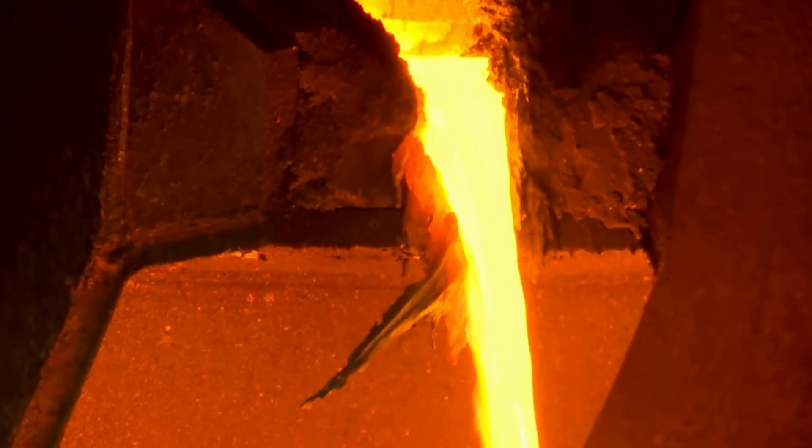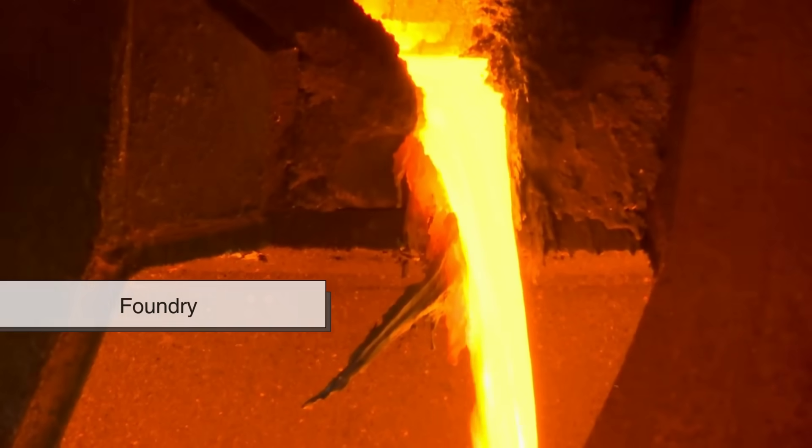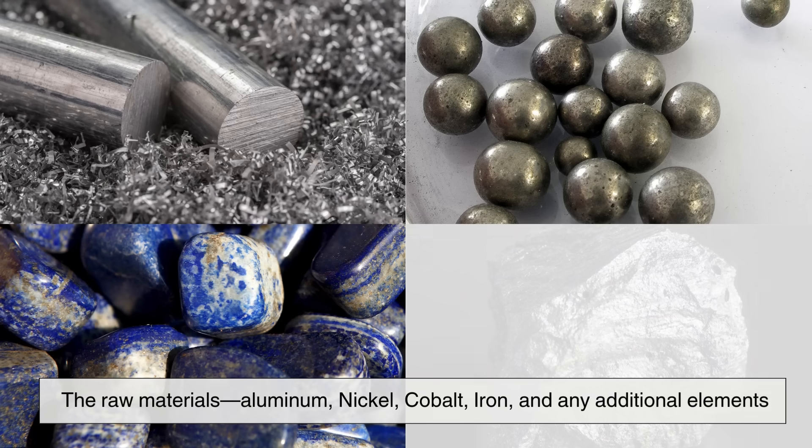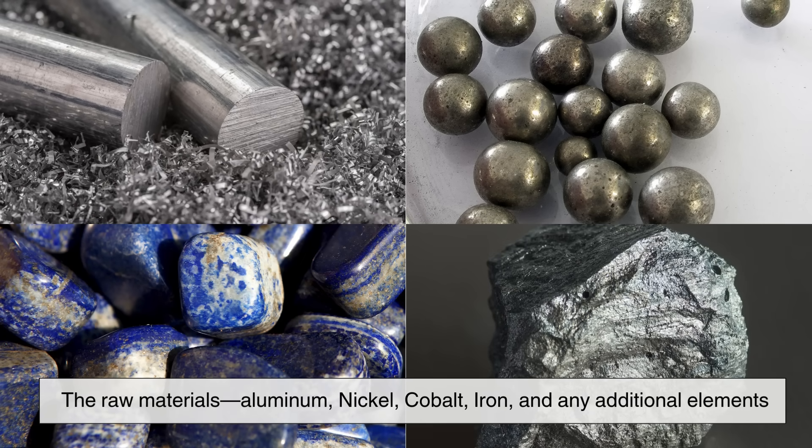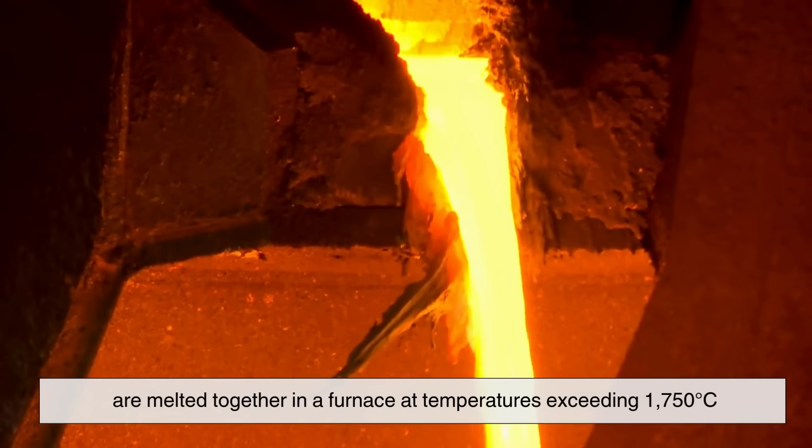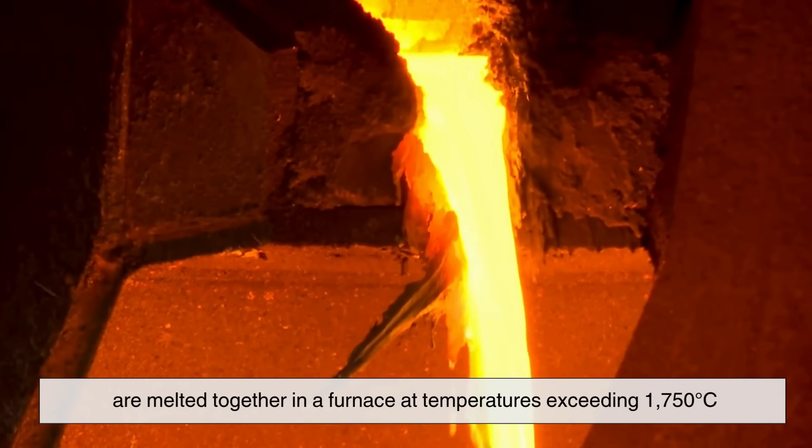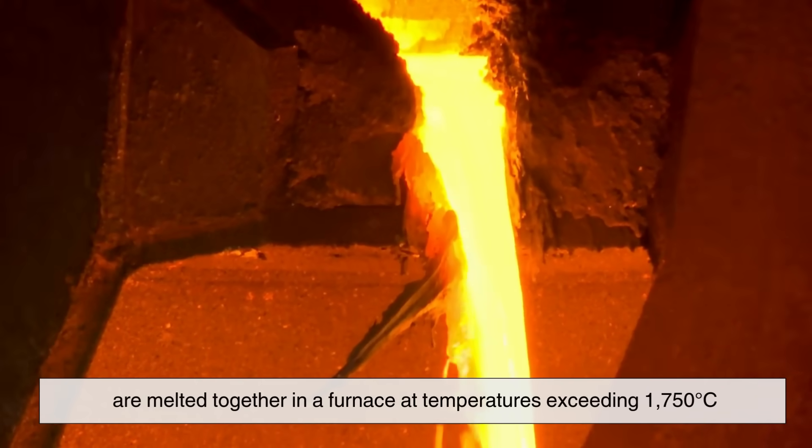The journey of an Alnico magnet begins in a foundry. First, the raw materials—aluminum, nickel, cobalt, iron, and any additional elements—are melted together in a furnace at temperatures exceeding 1,750 degrees Celsius. This intense heat ensures that all the metals mix thoroughly, creating a uniform alloy.